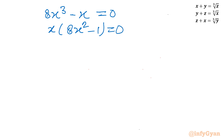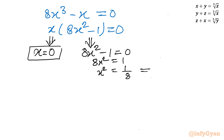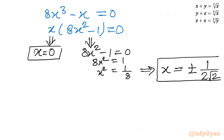From here we can conclude two cases. Either x = 0, or 8x² minus 1 = 0. For the second case: add 1 to both sides to get 8x² = 1, divide both sides by 8 to get x² = 1/8, then take the square root of both sides: x = ±1/(2√2).